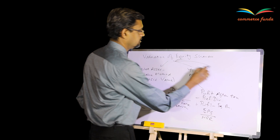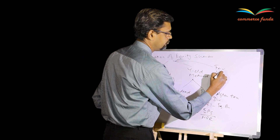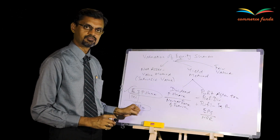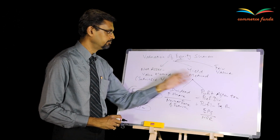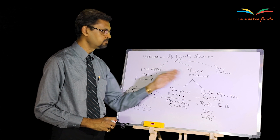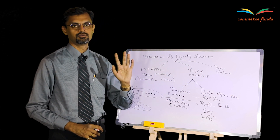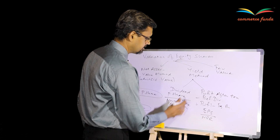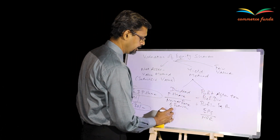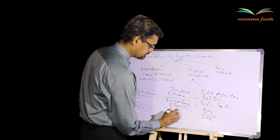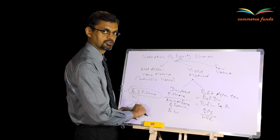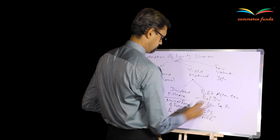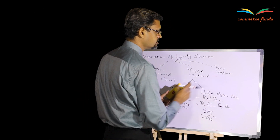The third method is the fair value method. It is simply the average of the two: calculate as per intrinsic value method, calculate as per yield method, add the two and divide by 2. For example, if the intrinsic value method gives 30 rupees per share and the yield method gives 40 rupees per share, the fair value is 30 plus 40 divided by 2, which is 35 rupees. So fair value essentially averages out the two methods.